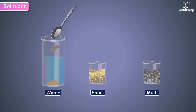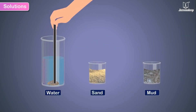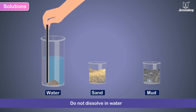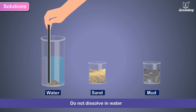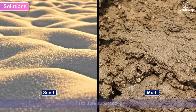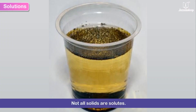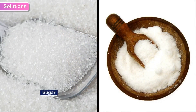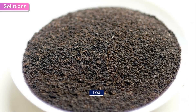When sand or mud is stirred in water, they do not dissolve in water. We can say that sand and mud are insoluble substances. Not all solids are solutes. Sugar and salt are solutes in water, but tea powder is not.